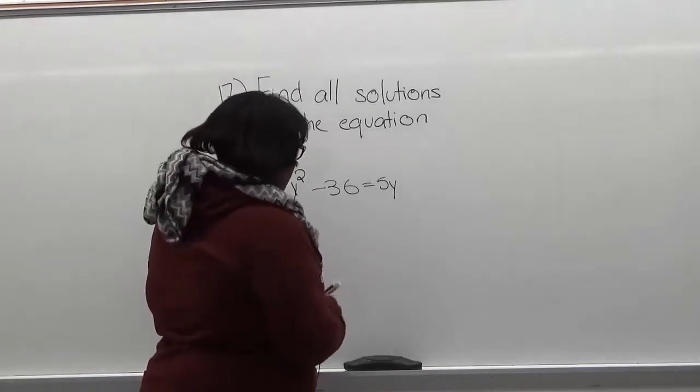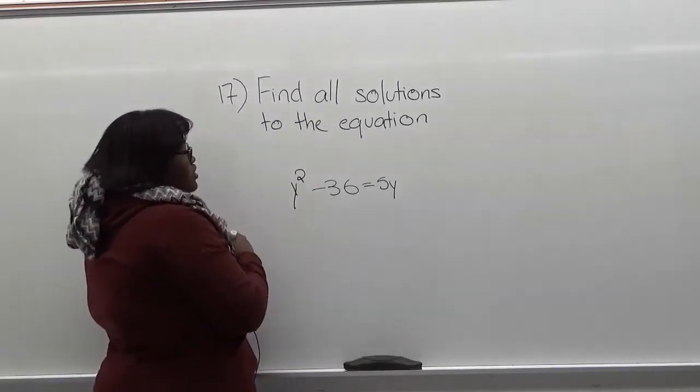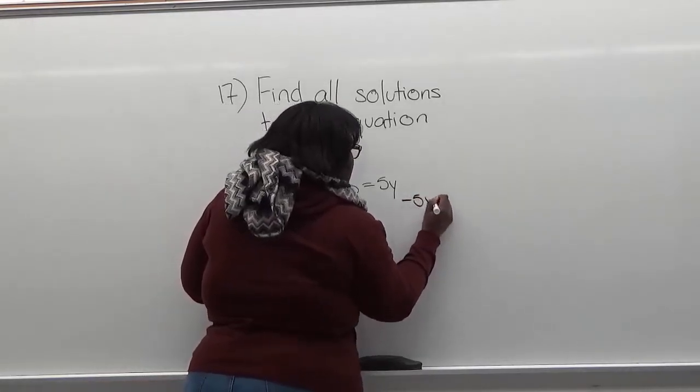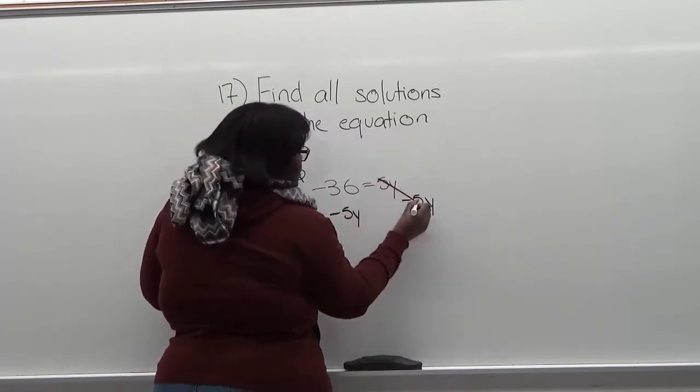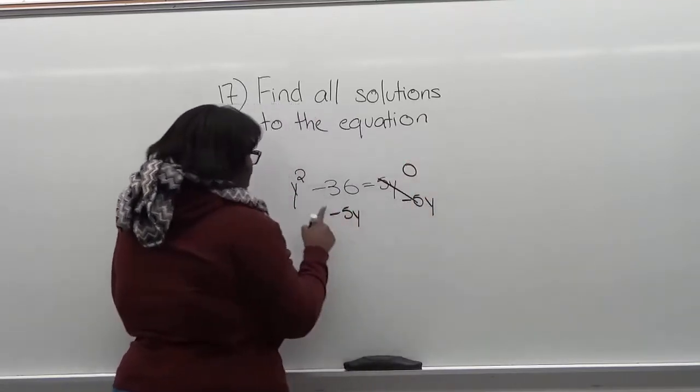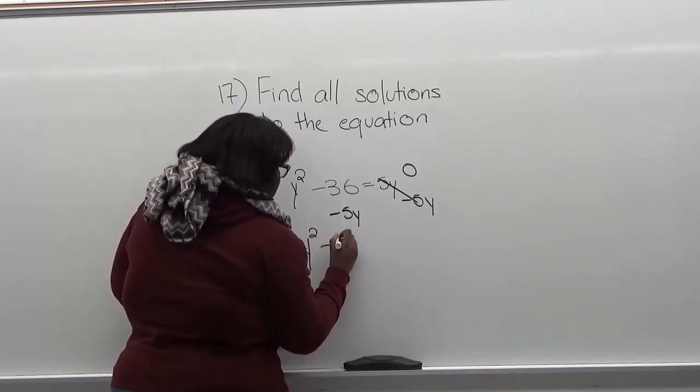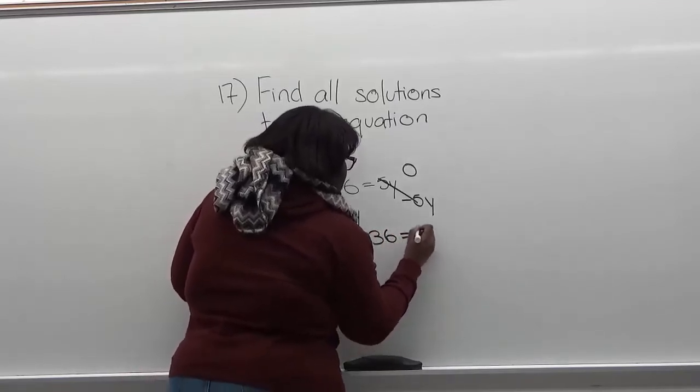First to solve this we have to get all the terms on one side. To do this we have to minus 5y on both sides. This will cancel and give us 0, and then we're going to rewrite this as y squared minus 5y minus 36 equals 0.